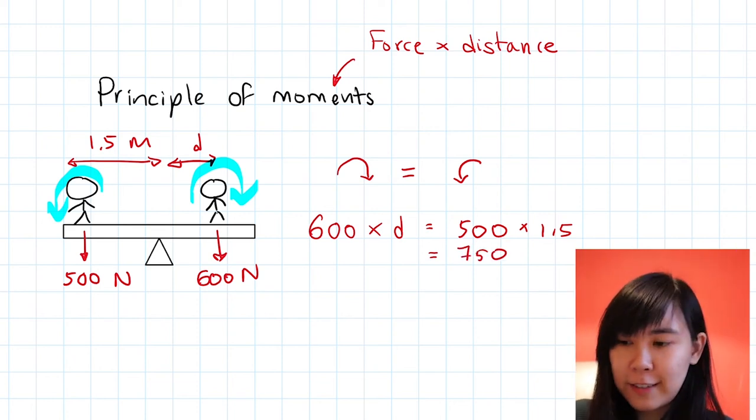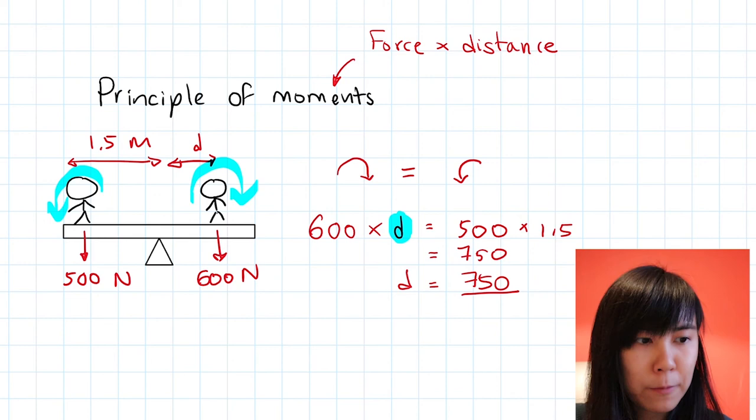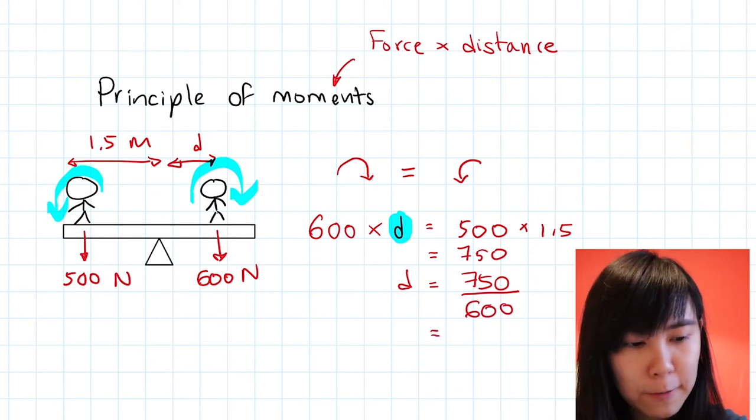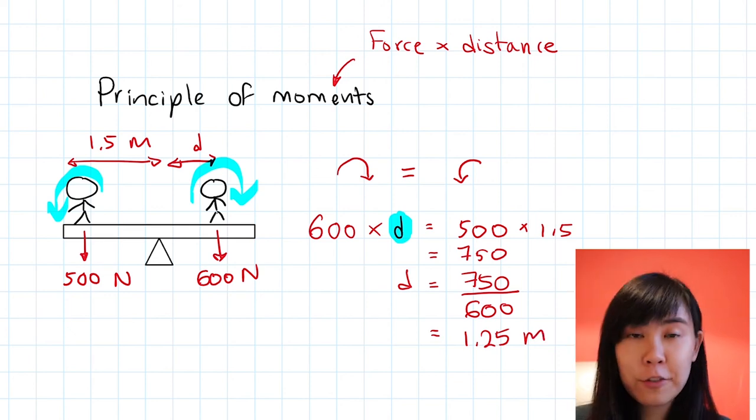In order to make d the subject, I need to divide 750 by 600, and that gives us 1.25 meters.